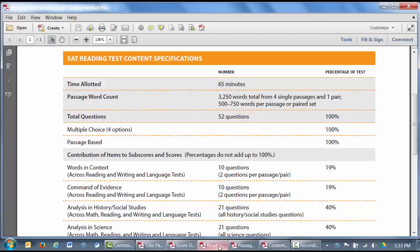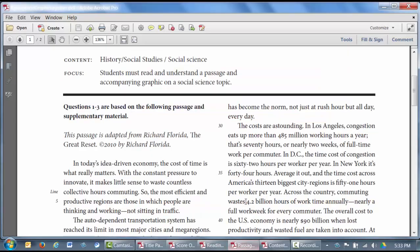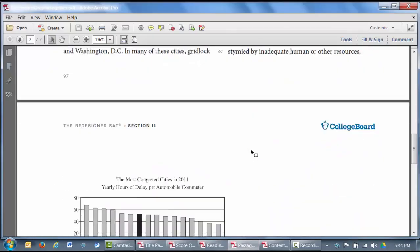You'll have 65 minutes to read the passages and answer the questions. On each test, you can expect to see at least one pair of passages and at least one passage with an informational graphic or graphics. For example, here's a single social science passage followed by a bar graph.